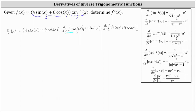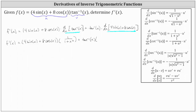For the next step, we determine the derivatives and then simplify if possible. So f prime of x is equal to the quantity four sine x plus eight cosine x times the derivative of inverse tangent x. If we take a look at our formulas here on the right, when u is equal to x, u prime is just equal to one, and therefore the derivative of inverse tangent x is just one divided by the quantity one plus x squared. And then we have plus inverse tangent x times the derivative of four sine x plus eight cosine x with respect to x, which is equal to four cosine x minus eight sine x.